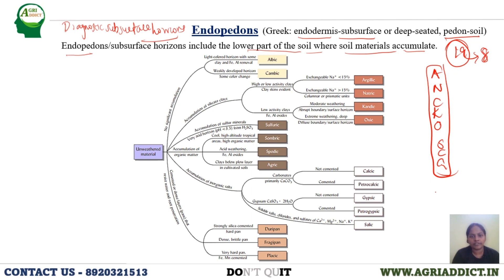All endopedons form from some unweathered materials which, after weathering, give rise to these horizons. If albic endopedon is formed, a light-colored horizon develops where clay and iron-aluminium have been removed — 'albic' means pale in color. Next, if only weak development occurs with some color change, a cambic horizon results.